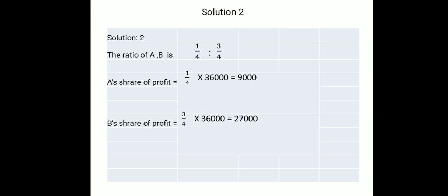Let x be the profit of C, since C is independent. Then B's profit is x plus 350, because B receives 350 more than C. A's profit is B's profit plus 1400, which is (x + 350) + 1400, so A's profit equals x plus 1750.